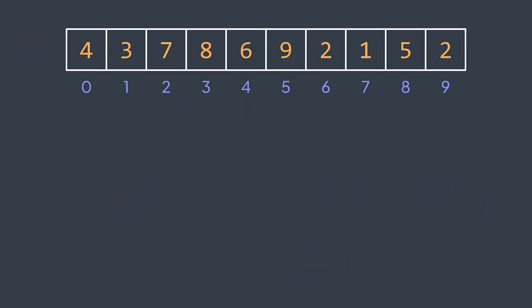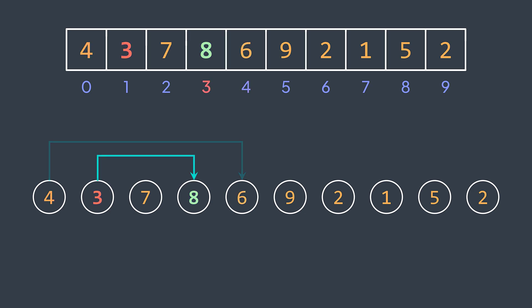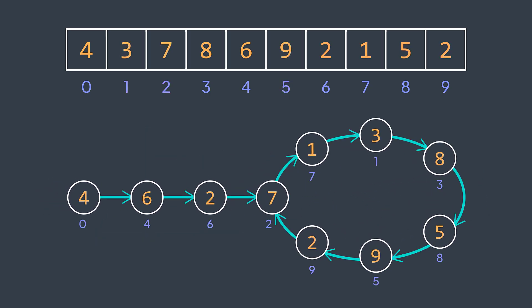Now let's represent the array as a linked list where each node points to the index of its value: index 4 points to element at index 4 (which is 6), index 3 points to element at index 3 (which is 8), and so on. After repositioning the nodes, we can see a linked list with a cycle, and the index of the cycle's entry point represents the duplicate value. This is because a cycle forms when two nodes point to the same node — and since duplicates share the same value, both point to the same index. We use Floyd's algorithm to find that entry point and return it.